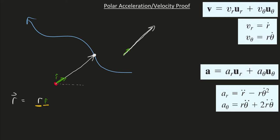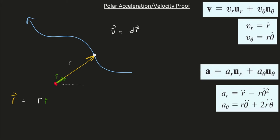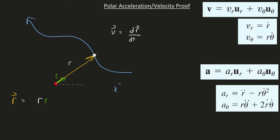So r̂ is here — let me draw the full position vector in a different color, yellow. And r is just a scalar, just the scalar length from here to here. Of course, velocity is the derivative of the position vector — how much does our position vector change if time changes a bit. So we really have to take the derivative of this r vector, and that requires product rule.